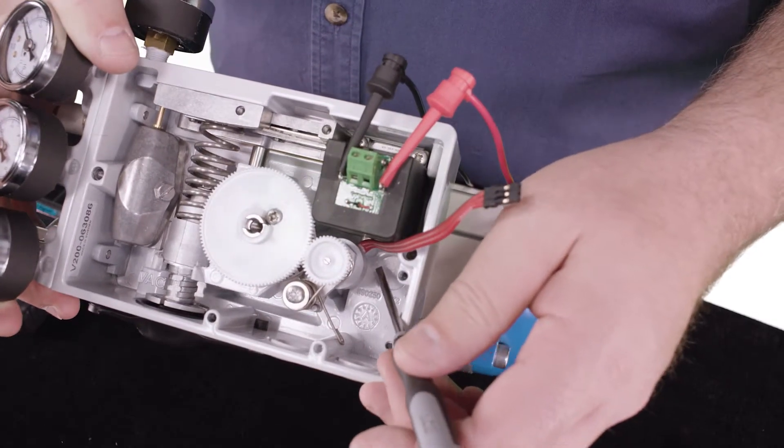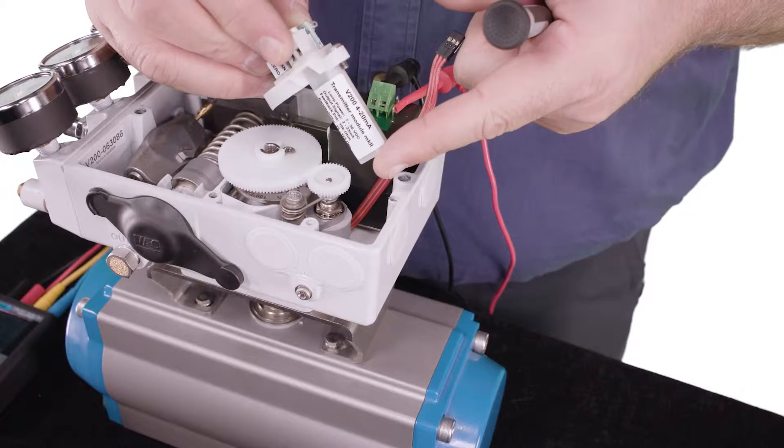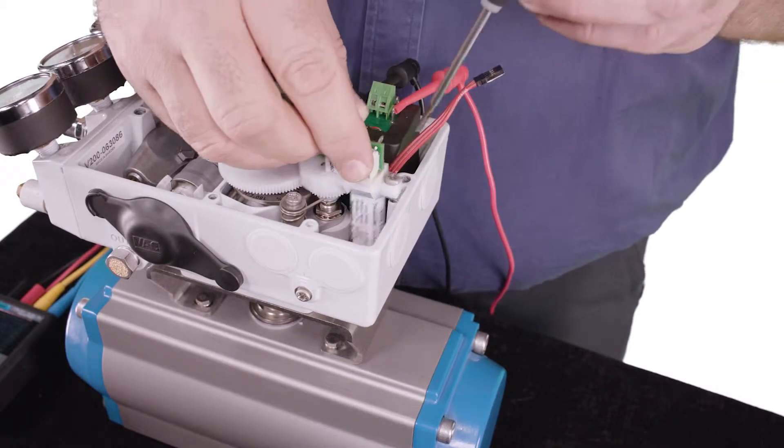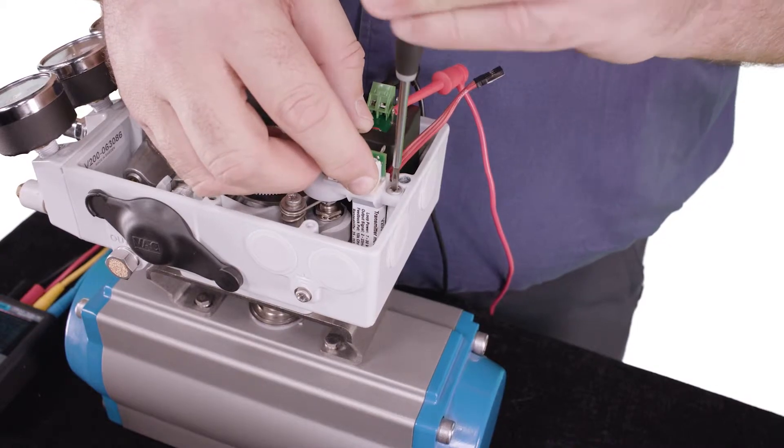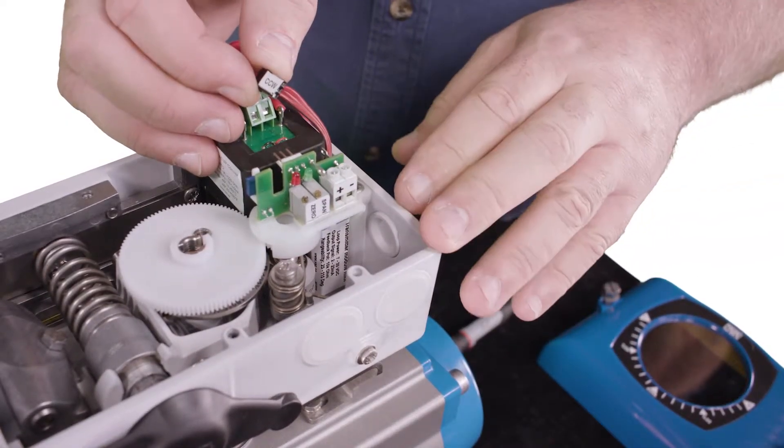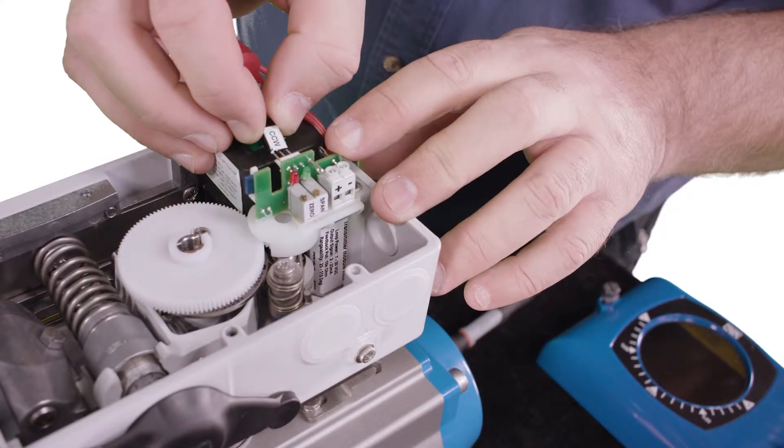There's a round socket in the bottom of the positioner housing. The bottom of the transmitter module fits in that socket, and this screw here is used to attach the module. The last step is to plug the potentiometer into the transmitter module with the CCW sticker facing up.